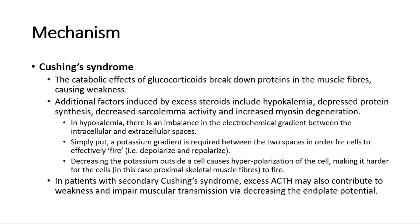In Cushing's syndrome, the catabolic effects of glucocorticoids break down proteins in the muscle fibers, causing weakness. Additional factors induced by excess steroids include hypokalemia, depressed protein synthesis, decreased sarcolemma activity, and increased myosin degeneration. In hypokalemia, there is an imbalance in the electrochemical gradient between the intracellular and extracellular spaces. A potassium gradient is required between the two spaces for cells to effectively depolarize and repolarize. Decreasing potassium outside a cell causes hyperpolarization, making it harder for proximal skeletal muscle fibers to fire.